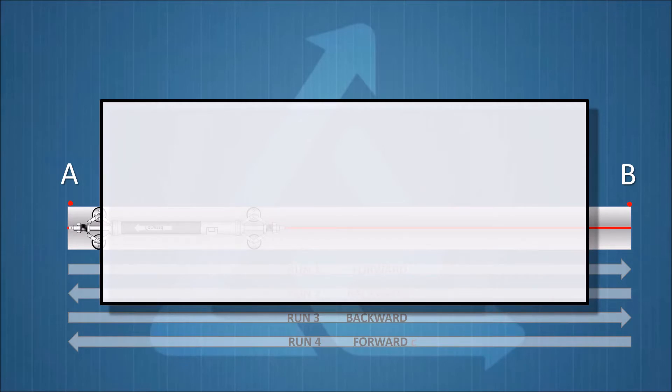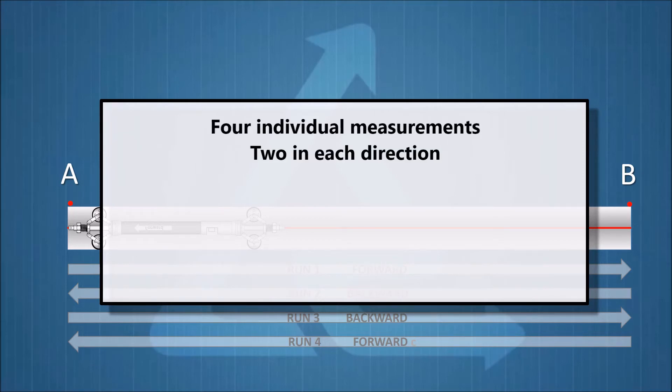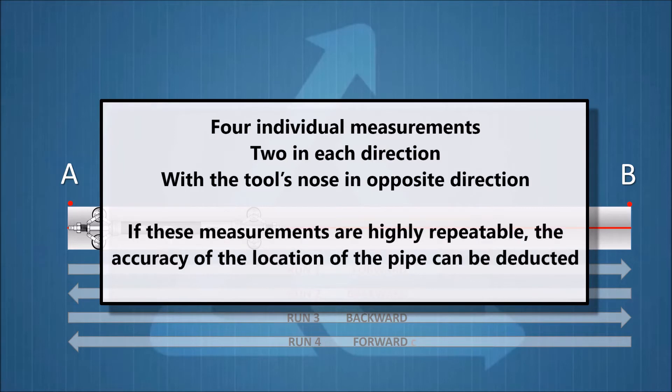In summary, the recommended standard operational procedure yields four individual measurements. Two in each direction, with the tool's nose in the opposite direction. If these measurements are highly repeatable, an estimated accuracy of the pipe's location can be deducted. We refer you to the tutorials for X-traction and X-view to obtain the profiles of the measurement.